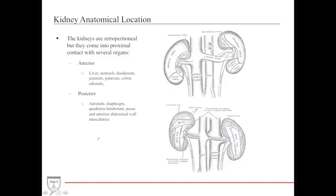Although the kidneys are retroperitoneal, they are in close contact with many structures. Anteriorly they're close to the liver, spleen, duodenum, stomach, colon, pancreas, jejunum, and adrenal glands. Posteriorly, they are associated with the adrenal glands, diaphragm, quadratus lumborum, psoas major, and anterior abdominal wall musculature. Because the kidneys are in such close proximity to many organs, when they become inflamed or irritated it can cause compression and back pain.